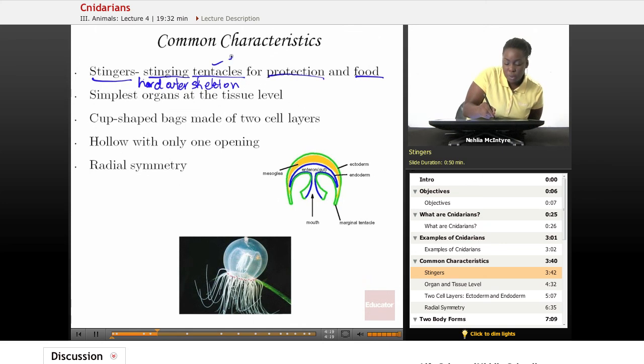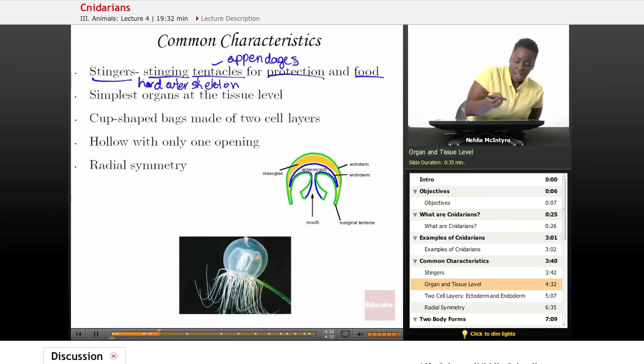Tentacles are like arms or appendages that come out of the Cnidarian and help that Cnidarian to gather food and help it to protect itself from predators.